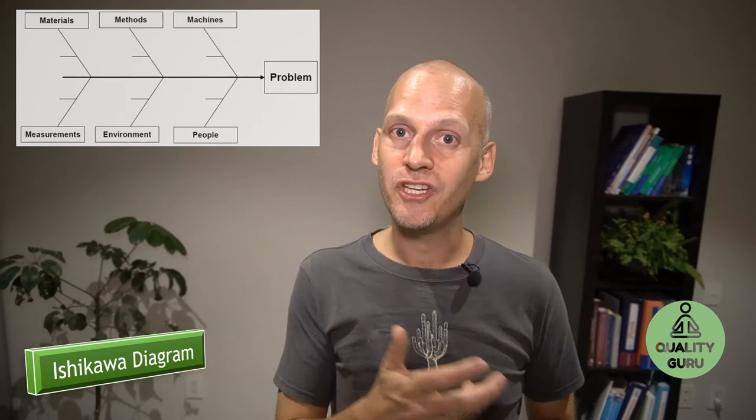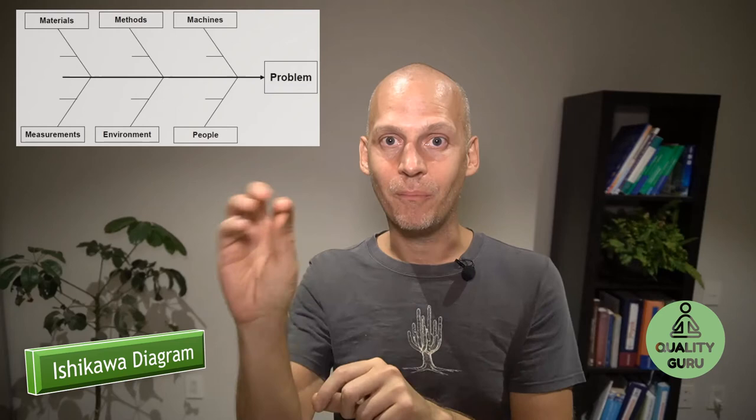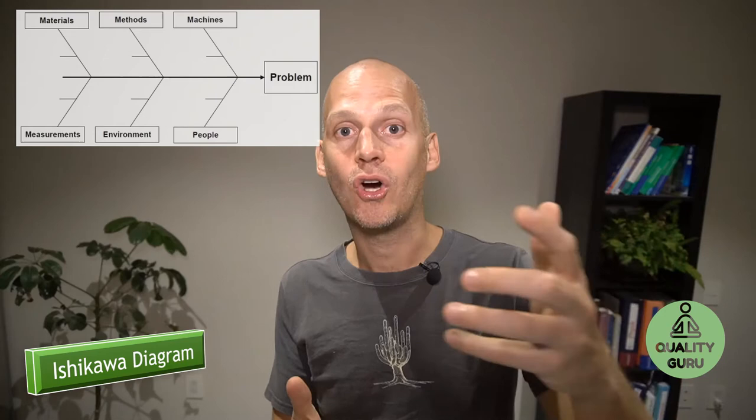It's also called fishbone diagram because it looks like a fishbone. And some also call it the cause and effect diagram because we have an effect which is my problem in the head of the fish, and then I go basically backwards asking for possible causes to identify the root cause of the problem.